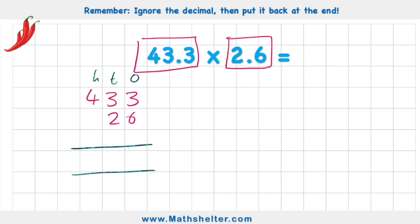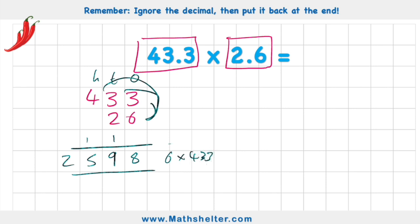Let's do this super fast. 6 times 3 is 18. 6 times 3 again — 18 plus the 1 is 19. 6 times 4 is 24, plus my 1 is 25. So 6 times 433 is 2,598.